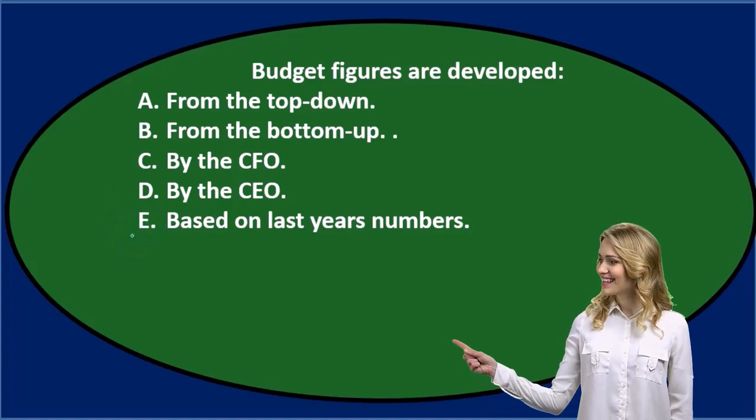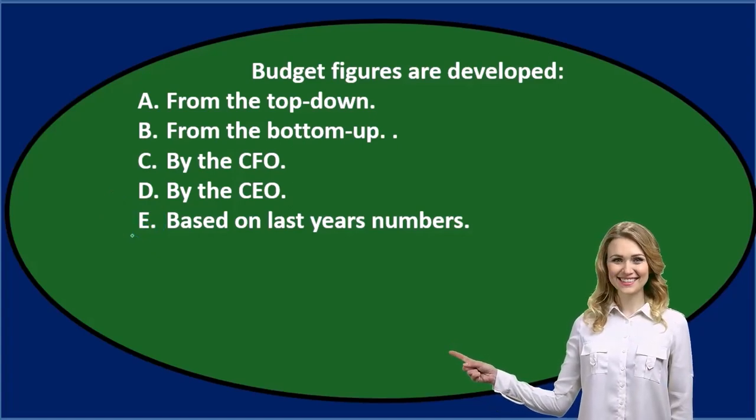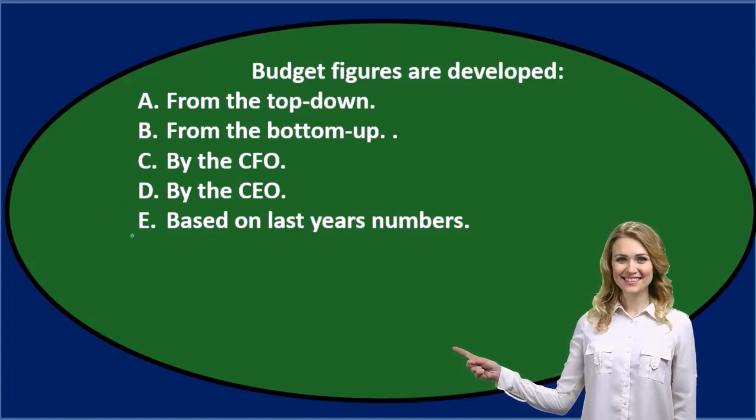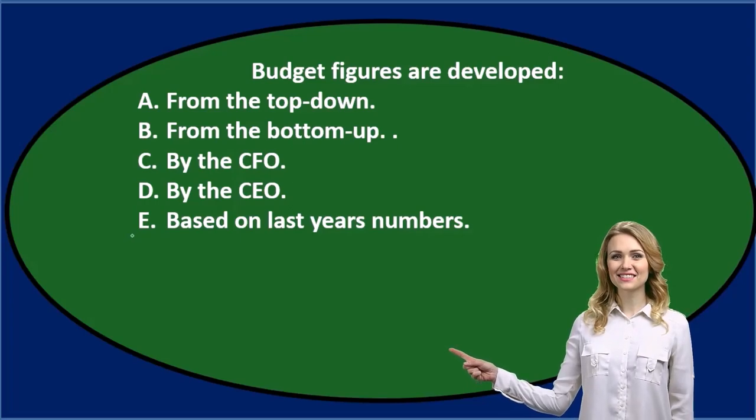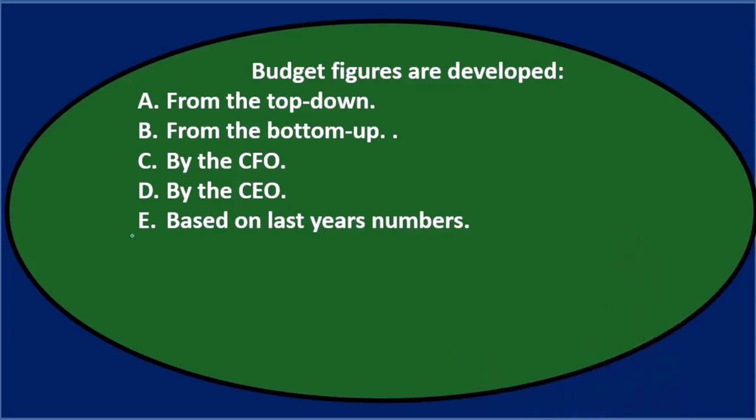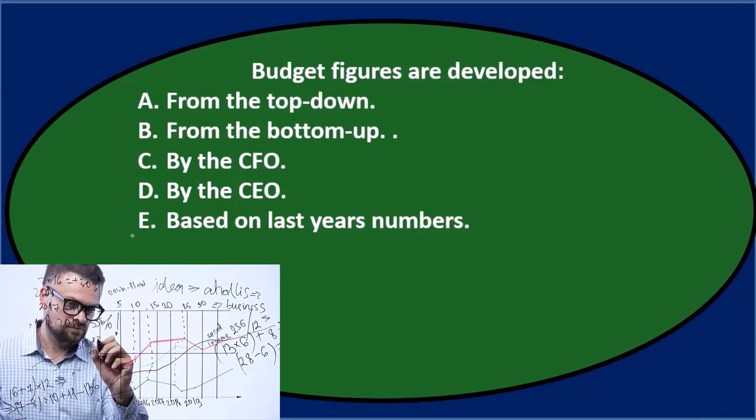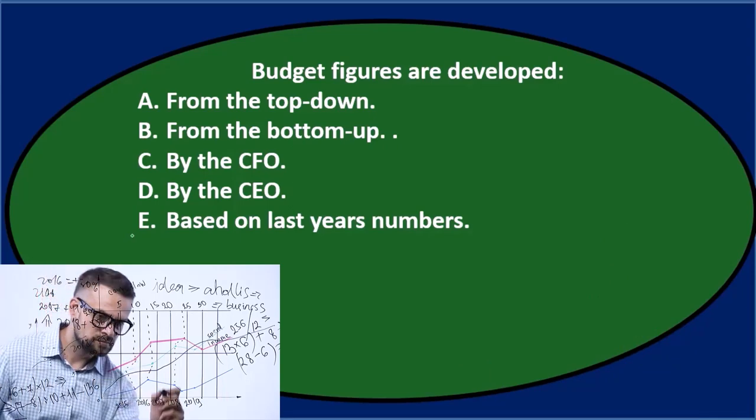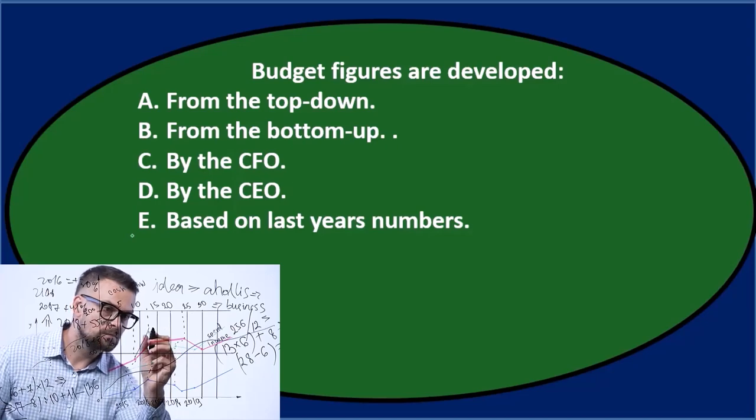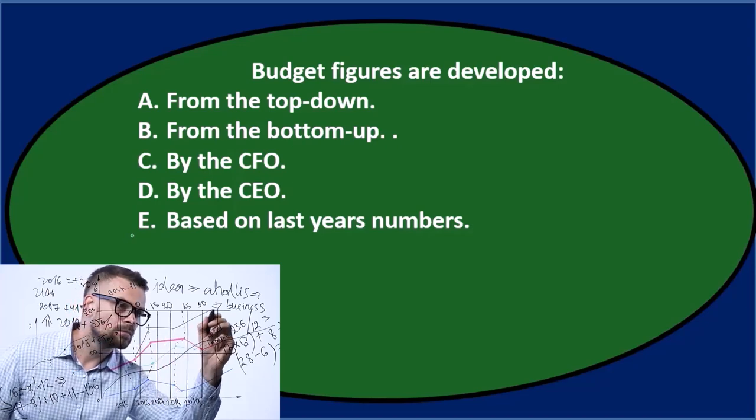Because anytime a question says it's only based on last year's numbers, it's not normally going to be the answer. It's got to qualify that somewhere. Last year's numbers are the starting point, but we can't just take last year's numbers and roll them forward. That's not how the budgeting process is going to work, at least for a book problem. So it's not going to be E.